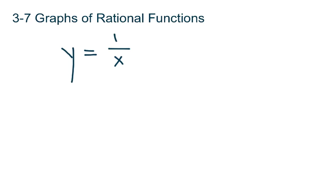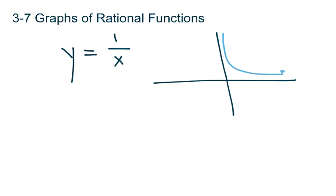In Algebra 2, we introduced you to the rational functions. The parent function of the rational functions was y equals 1 over x. And the graph of y equals 1 over x produced two hyperbolas that occurred in quadrants 1 and 3.